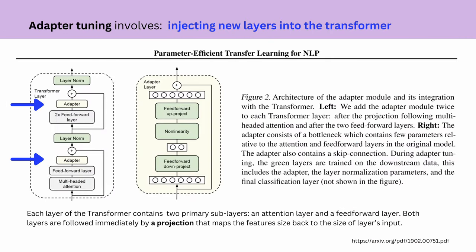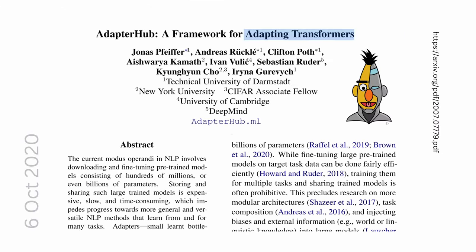Adapter tuning involves injecting new architectural layers into the transformer architecture. For example, on the decoder you have multi-headed attention, a feedforward layer, and then a new layer called an adapter. The adapter more or less projects the feature maps back to the size of the layer input. For each task you can train a specific adapter, and if you have 100 tasks you get 100 adapters.